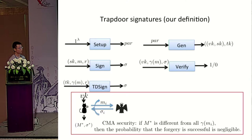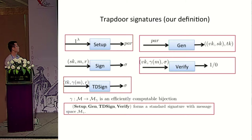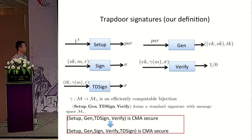This is the CMA security for the trapdoor signatures. It's similar to standard flexibility: the adversary makes signing queries to the challenger and gets answers back, and at some point outputs the forgery (m*, sigma*). The security guarantees that if m* is different from all gamma(m), then the probability that the forgery is successful is negligible. We proved that if the scheme formed by setup, keygen, td-sign, and verify is CMA secure, then our trapdoor signature scheme is also CMA secure.